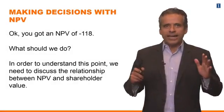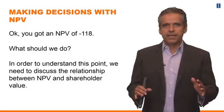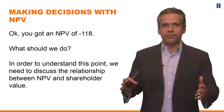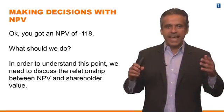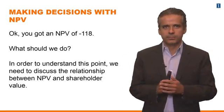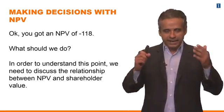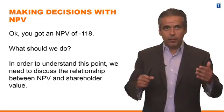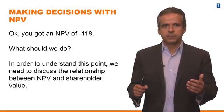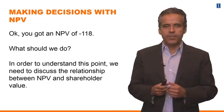We got an NPV of minus $118 million — that's what we just calculated. Now we have to think about what net present value means and how we are going to use net present value to make decisions.